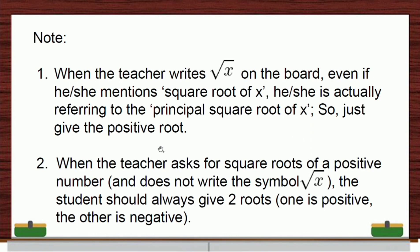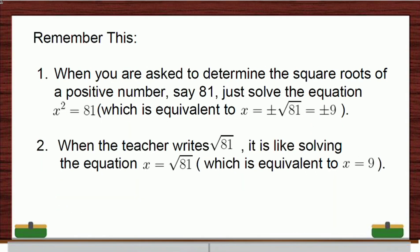So, just give the positive value or the positive root. When the teacher asks for square roots of a positive number but does not write the symbol, the student should always give two roots. One that is positive and the other is a negative number. So, when you are asked to determine the square roots of a positive number, say 81, just solve this equation. Remember this: x squared equals 81. And this equation is equivalent to x equals plus or minus the square root of 81 or plus minus the radical of 81. When we solve this, this one is 9. That's why we have plus and minus 9. Plus 9 or negative 9.